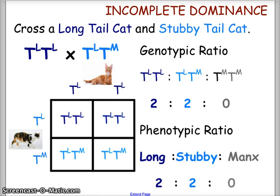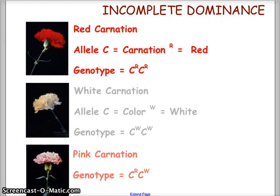For another example, we cross a long-tailed cat with a stubby-tailed cat. The TL alleles for the long-tailed cat are segregated across the top, and TL and TM are segregated on the left. The top two offspring are both long-tailed cats (TL TL), and the two bottom offspring are stubby-tailed cats (TL TM). Our genotypic ratio is two homozygous long, two heterozygous stubby, zero Manx — a phenotypic ratio of 2:2:0.